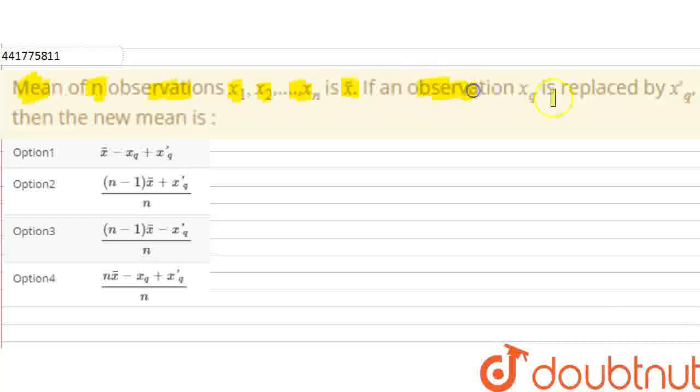If nth observation xq is replaced by x'q, then the new mean is. If you notice x1, x2, x3 to xn, one observation xq is replaced by x'q. So the mean they are asking for.